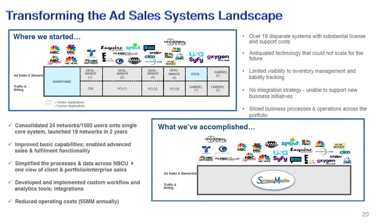In the top left you see basically where we started — there's a big blue box that says 'mainframe,' with a little bit of custom development in there. This represents 19 different systems that all had their own support models and support costs, supporting every individual business at NBC disparately. There was no opportunity for analytics or data mining — all that stuff would have been dumped into a warehouse, homogenized, ETL'd, and then we potentially could have gleaned some learnings from it. We've been able to consolidate about 1,200 users onto one system representing 24 different networks and about $11 billion of revenue.